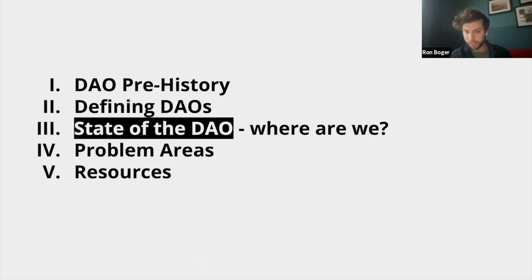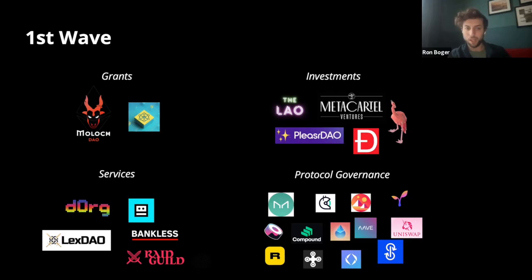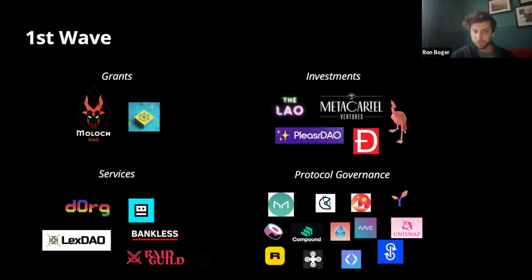As for where DAOs currently are: the first wave, up until about 2021, focused on grants, services, investments, and protocol governance. For investments, you have The LAO, which makes investments into different crypto projects. There are protocol governance DAOs such as Gitcoin, Uniswap, Sushi, and Compound, where people vote on protocol upgrades, new features, and partnerships. There are services DAOs like Diorg, and grants DAOs such as Moloch, where you can apply to receive grants and people have voting rights on where those grants should go.